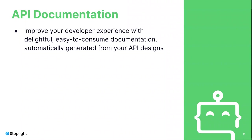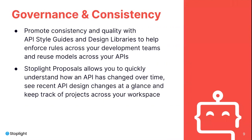With Stoplight's API documentation features, you can provide a top-notch developer experience for internal and external consumers through automatically generated documentation based on your OpenAPI files. This helps internal and external users discover, learn, and integrate with your APIs quickly by publishing interactive API documentation, tutorials, and code samples that are always up to date. With Stoplight's governance features, you can govern your APIs at scale with an always-in-sync central repository of API designs, schemas, and documentation. You can easily share, apply, and enforce standards across all API designs to provide consistency, reusability, and better governance.